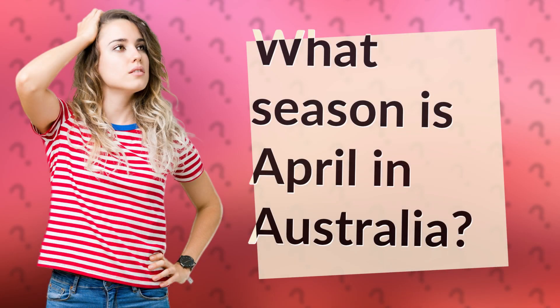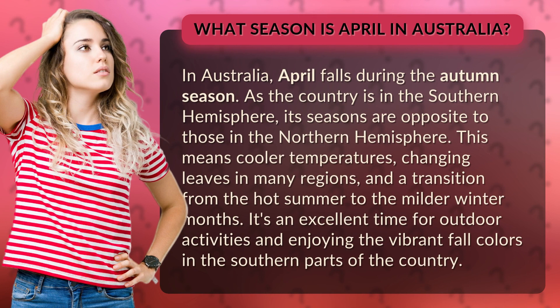What season is April in Australia? In Australia, April falls during the autumn season. As the country is in the Southern Hemisphere, its seasons are opposite to those in the Northern Hemisphere. This means cooler temperatures, changing leaves in many regions, and a transition from the hot summer to the milder winter months.